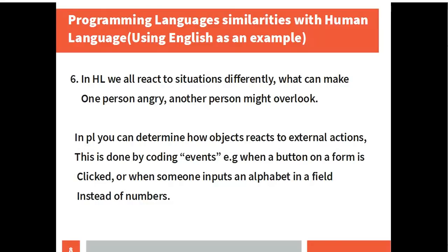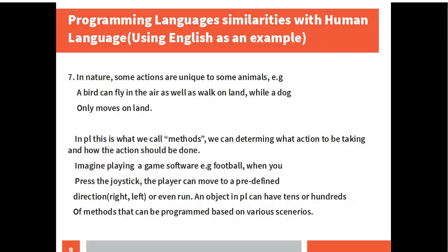The sixth similarity: in human life we can react to situations differently — what can make one person angry another person might overlook. In PL, you can determine how objects react to external actions. This is done by coding events, for example when a button on a form is clicked, or when someone inputs an alphabet in a field instead of numbers.